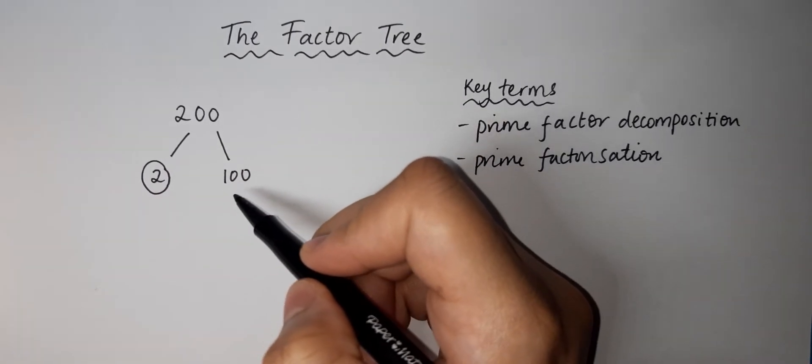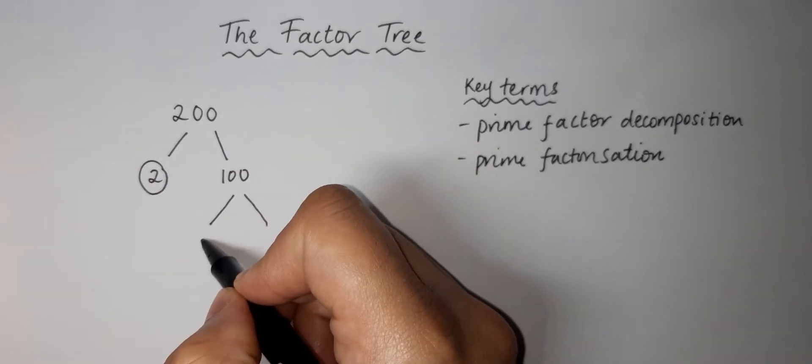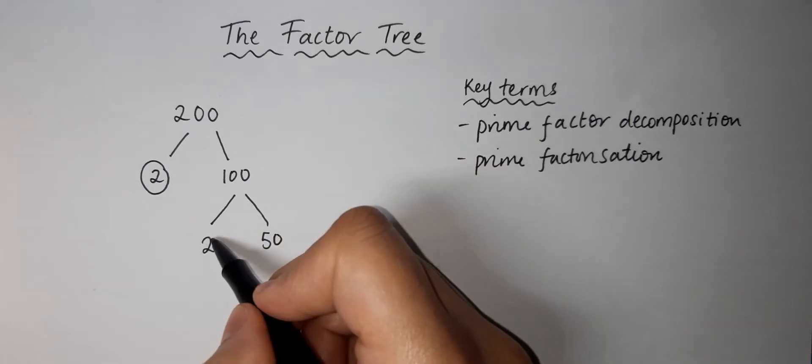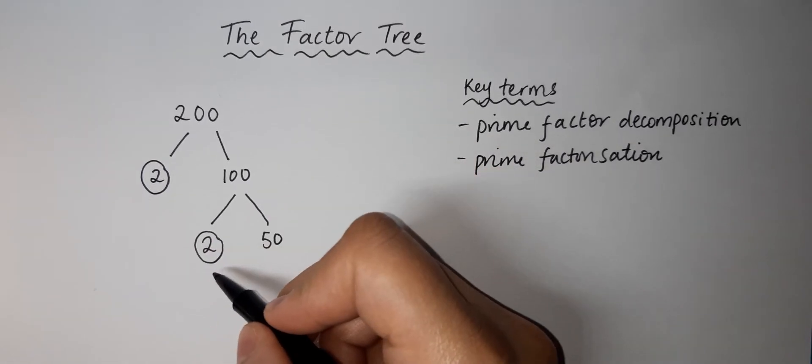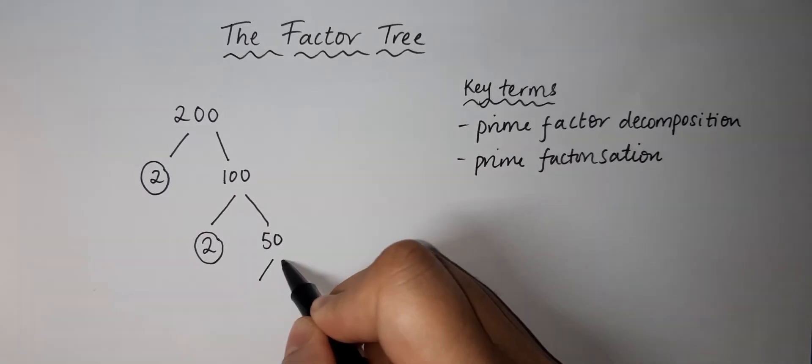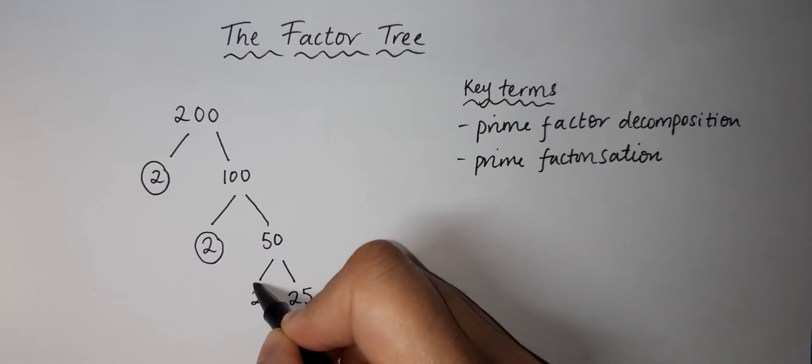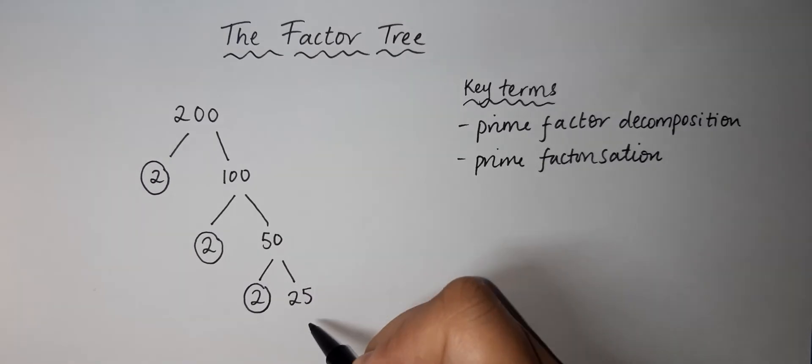100 can be split into 2 times 50. Again, there's a 2 here and it's a prime number, so we can't cut that down anymore. We look at the 50. It can be 2 and 25. Again there's a 2 here, we can't cut this down any further either, so we look at the 25.